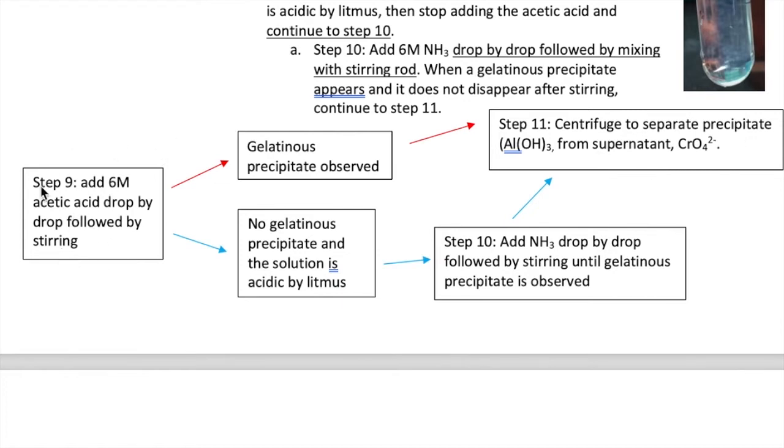However, going back to step 9, if while you're adding the acetic acid you don't see a precipitate and then you test the solution and it is acidic by litmus, you're going to continue to step 10 first, add ammonia until the precipitate is observed, and then once you see that you move on to step 11.